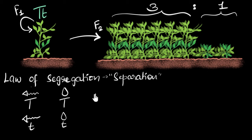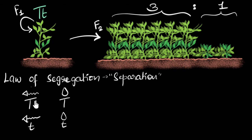How does this explain what happens? When we self-pollinate, the sperms are fertilizing the eggs. Now, depending upon which sperm fertilizes which egg, we might end up with a tall plant or a short plant. For example, if a sperm with a tall trait fertilizes an egg with a tall trait, then the fertilized egg will have both tall traits, and when that plant grows, it's going to be tall. But there are other possibilities as well — pause the video and see if you can find all the possibilities and get that magic three-to-one ratio.